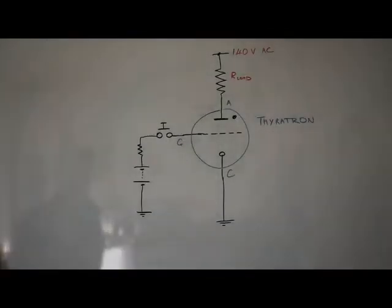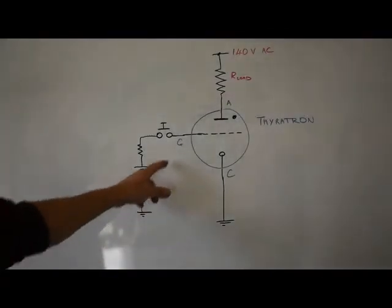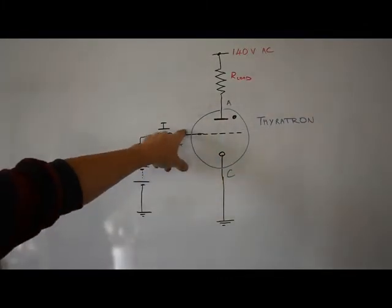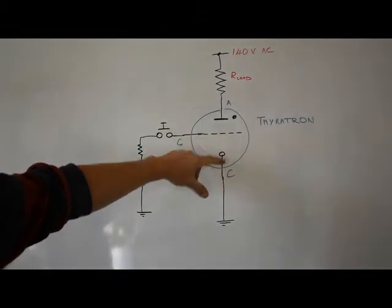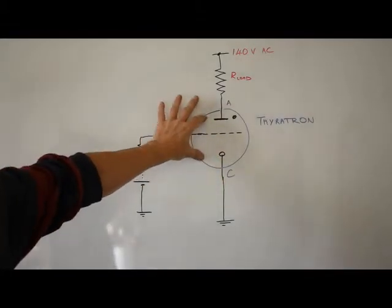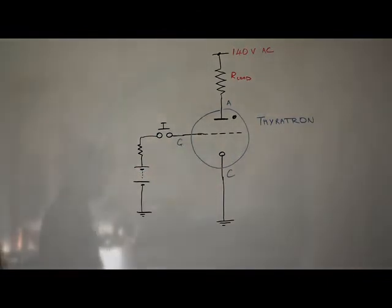So, how does it work? Basically, you have a gas or vapor in here and this is basically a trigger. Once it's triggered, the gas ionizes and that conduction path remains until there's an interruption. So you have basically a trigger and then a conduction path.